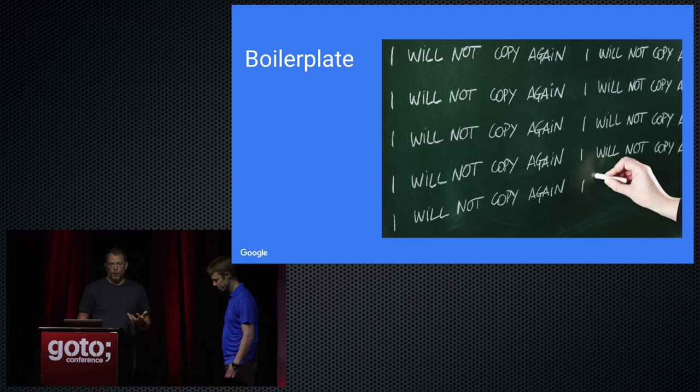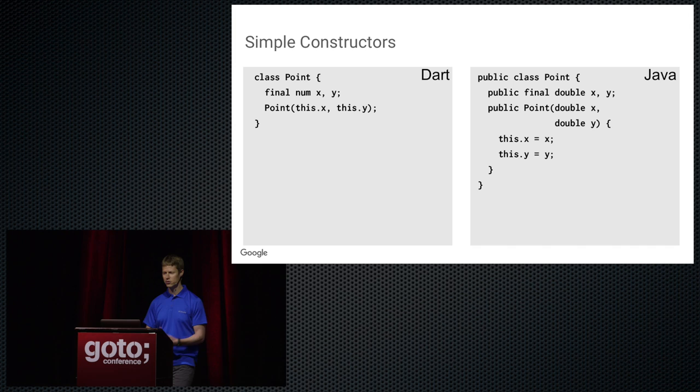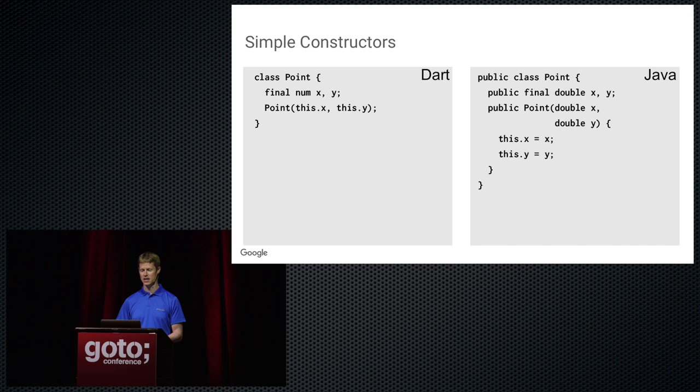Let's talk about boilerplate code. Everyone who writes code for a living has to write some boilerplate, but it's painful both to write and to read. Some argue good tooling in your IDE can fill it out for you, but there's still a tax you pay for reading it over and over again. In Dart, you have the ability to write very simple constructors that feed values passed to the constructor directly into fields. You can do the same in Java, it just takes more writing. We found that allowing this shorthand notation leads people to prefer simpler constructors with less side effects.